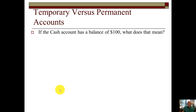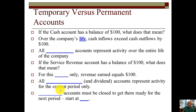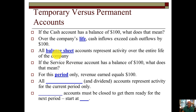Let's think about temporary versus permanent. If the cash account has a $100 balance, that just means that over the company's life, the cash inflows exceeded the cash outflows by $100. That means all balance sheet accounts represent activity over the entire life of the company. If the service revenue account has a balance of $100, since it's temporary, it means we zero it out at the end of the period — it means that for this period only, the revenue earned equals $100. All income statement and dividend accounts represent activity for the current period only, since they're zeroed out at the end of each period.